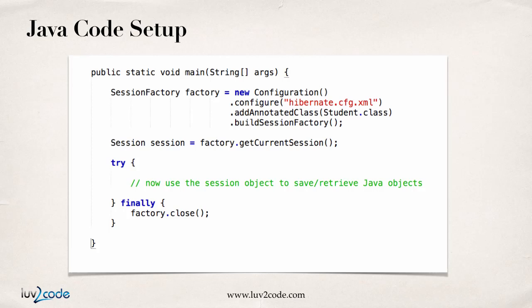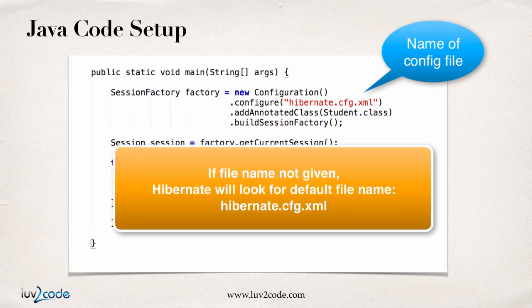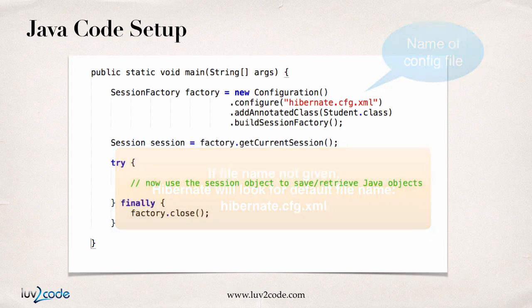One thing I want to point out: when we create the Session Factory and say .configure with a config file name, that's actually not required. You can simply say .configure() without a file name, and by default Hibernate will look for a file on your classpath called hibernate.cfg.xml. However, I like to be explicit during training to show you what file Hibernate is looking for. The file name is not required as long as you use the default file name.